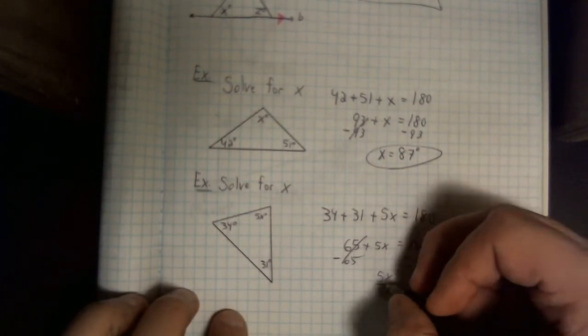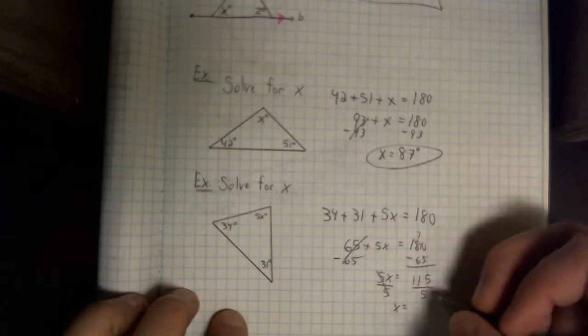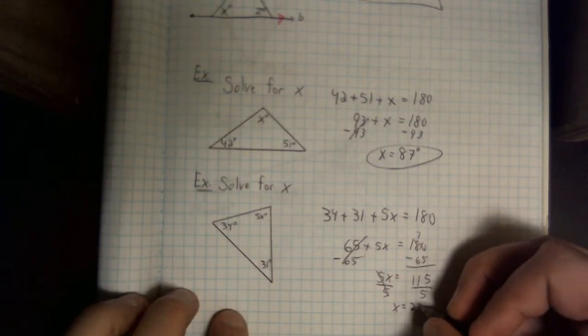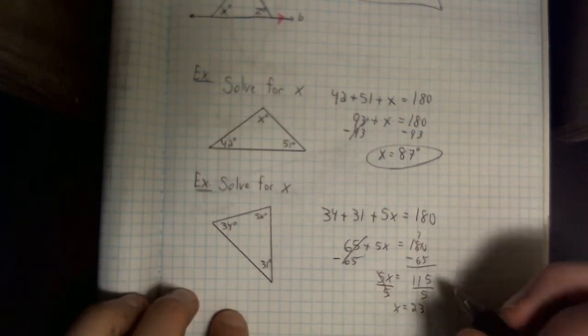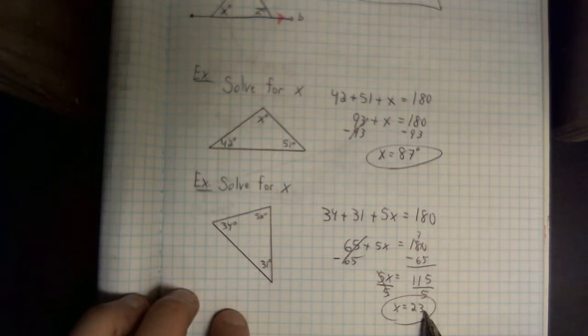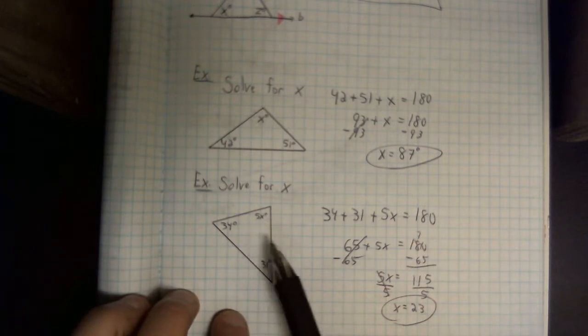I've got to divide by 5 to get that 5 out of there. Let's see, two 5's fit in, and that's going to leave 15 divided by 5 is 23. So, x equals 23. Now, that is not a degree measure. That is the value of x that will make this triangle add up to 180 degrees if we were to substitute it in here.